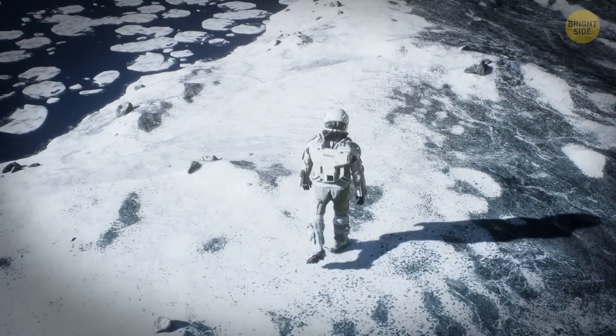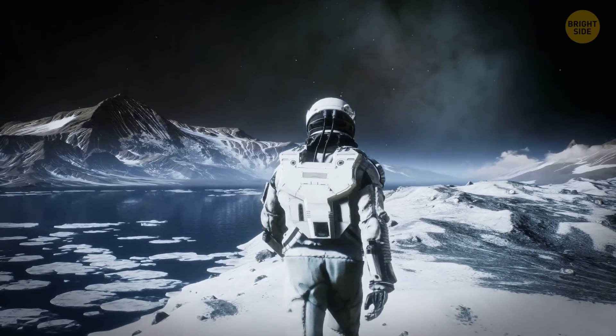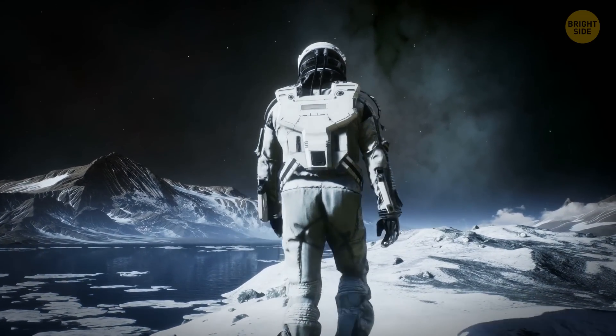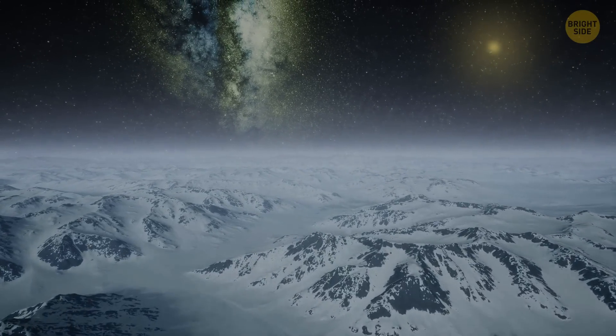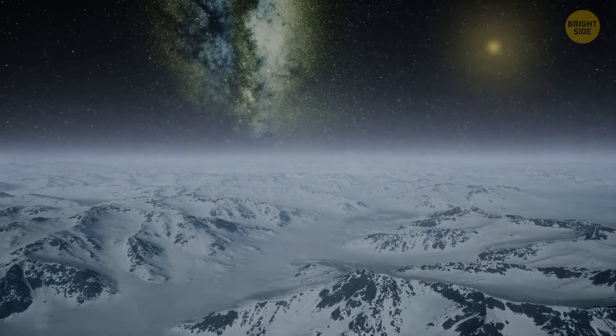If you were standing on Pluto, you'd see a lot of high, icy mountains, valleys, plains, and craters. The Sun would be very dim and far away, and it would always look like twilight. It's a colorful planet, surprisingly.